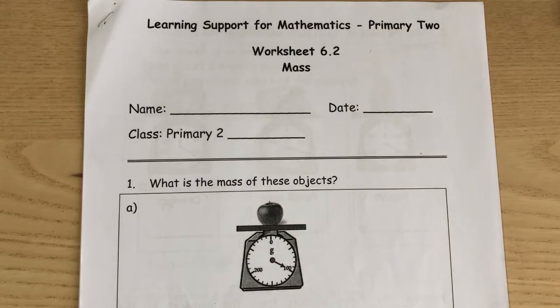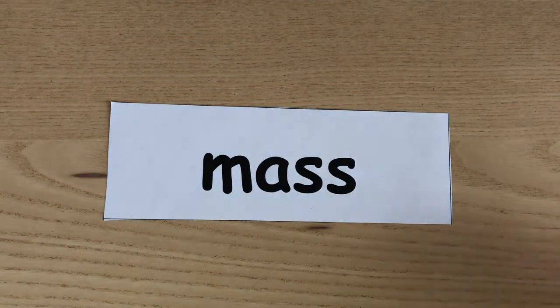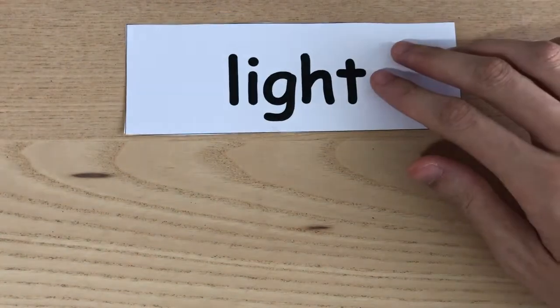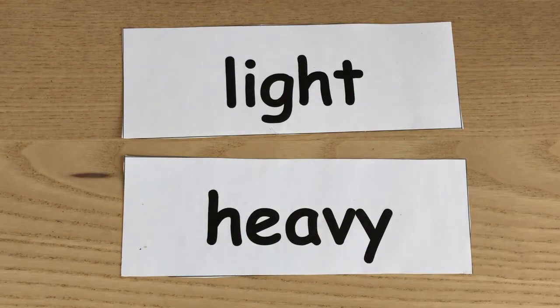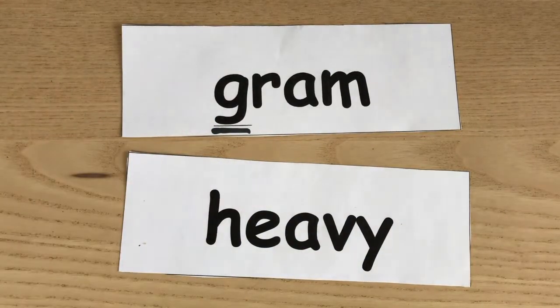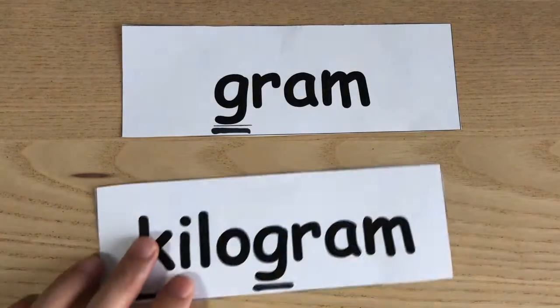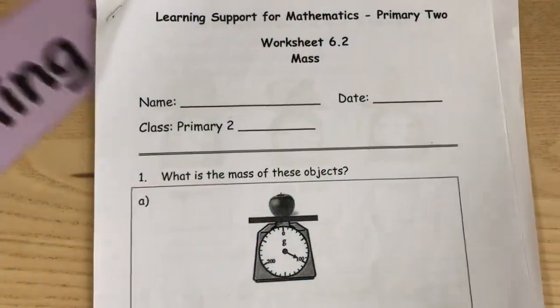Hello, Math Champions! Welcome to Worksheet 6.2 on Measuring Mass. Before I go through this worksheet, let's go through what the word mass means. If you have forgotten, mass is used to measure how light or how heavy something is. If something is light, the unit we use is grams, and the short form is g. If something is heavy, we use kilograms, and the short form is kg. Hopefully now you remember, and let's go through this worksheet together.